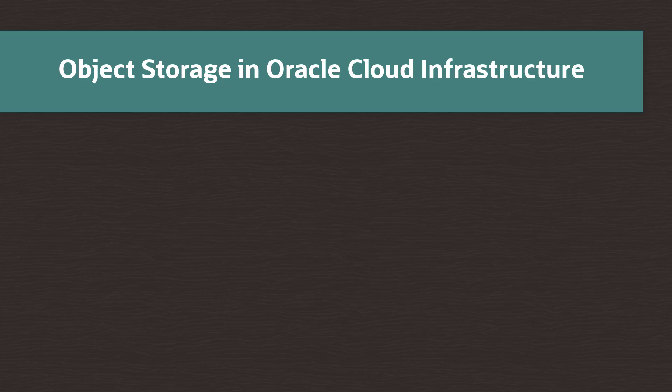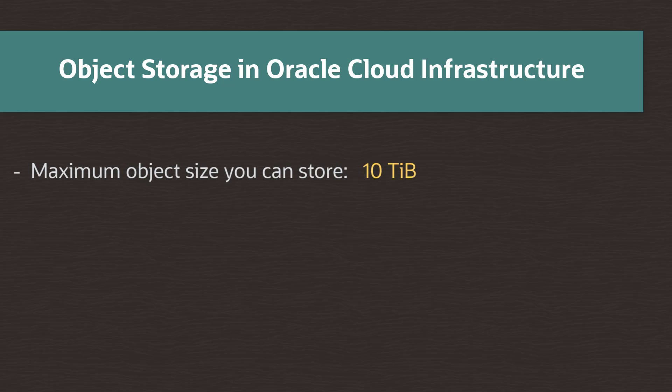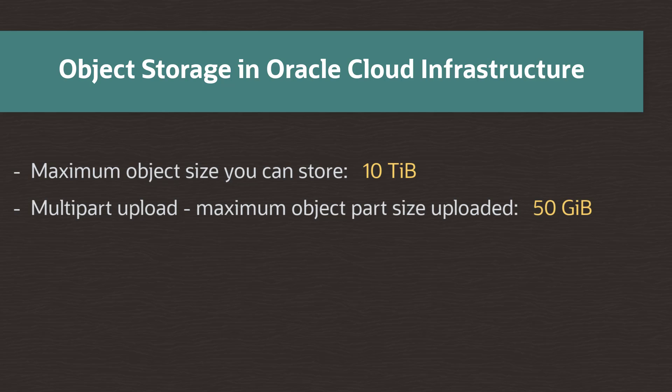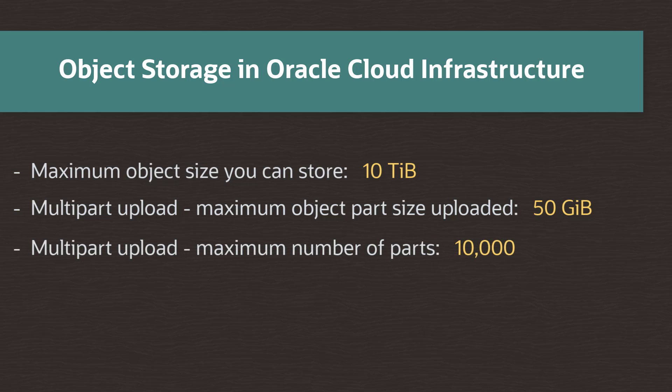Here are some useful numbers to remember when considering the size of upload supported. The maximum object size you can store is 10 GB. For multipart uploads, the maximum object part size that can be uploaded is 50 GB. The maximum number of parts allowed in a multipart upload is 10,000. And the maximum size of an object metadata is 2 KB.